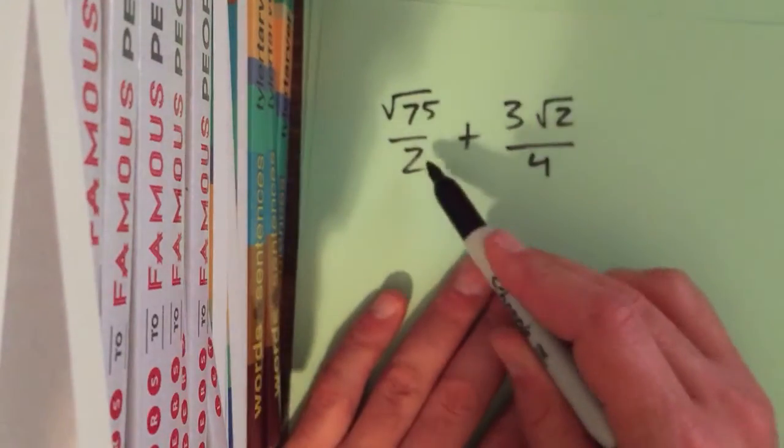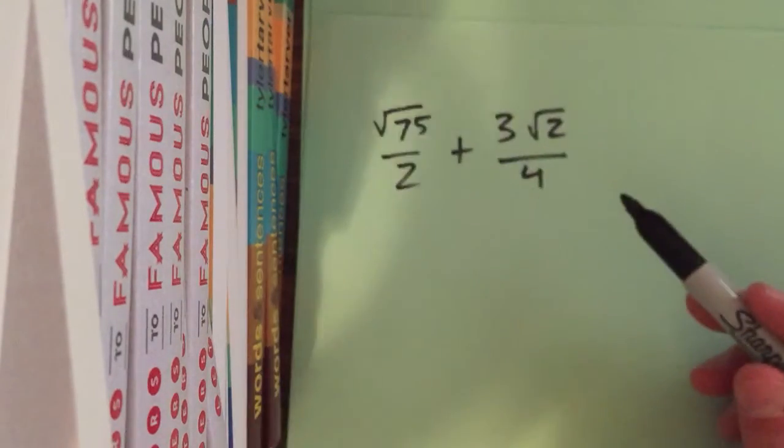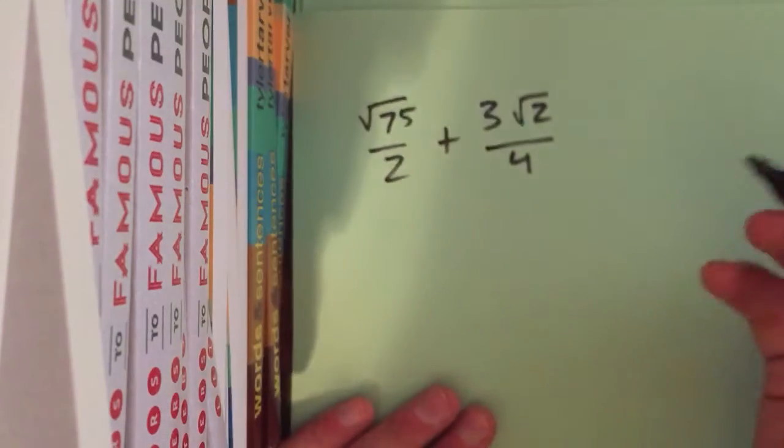Let's take a look at it. Okay, so you've got square root of 75 over 2 plus 3 radical 2 over 4. All right, well let's see what we can do.